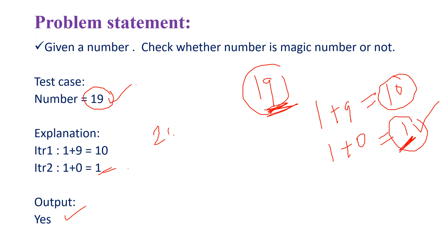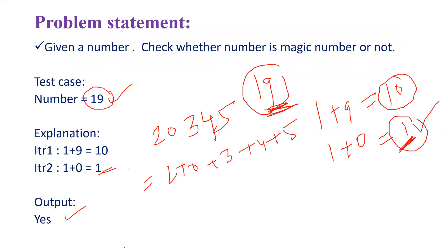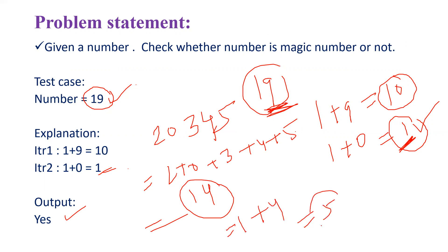Now take the number 20345. The sum of the digits is 2 plus 0 plus 3 plus 4 plus 5, which gives 14. Since 14 is not a single digit, perform the sum again: 1 plus 4 gives 5. We got a single digit, but it is not equal to 1, so 20345 is not a magic number.